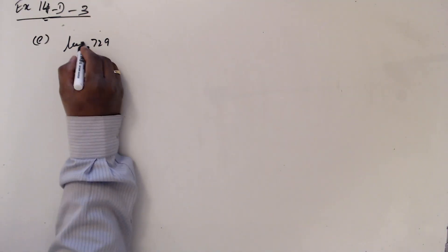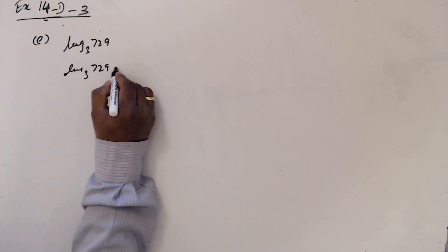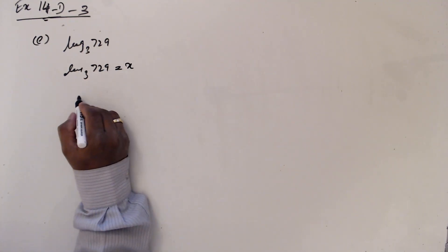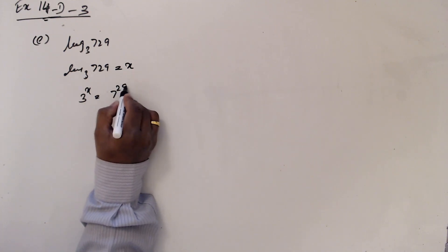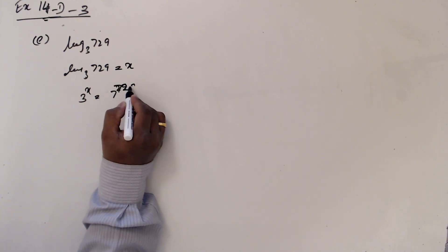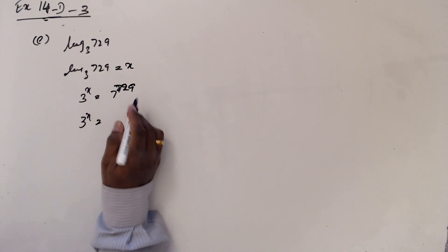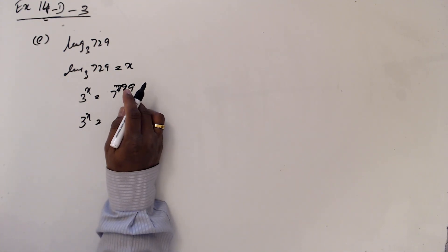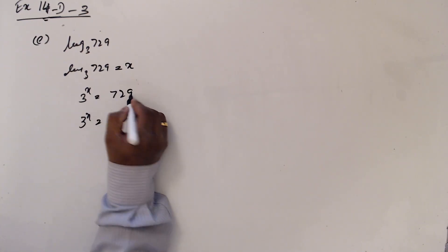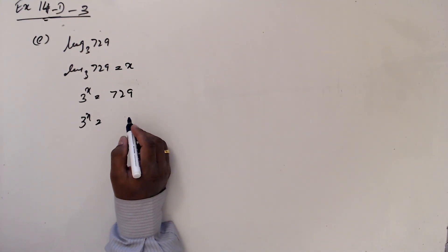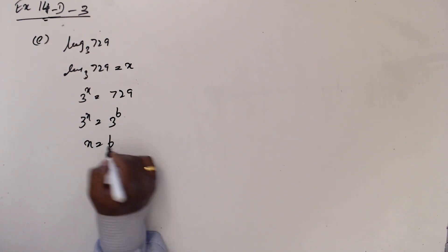Now this is e: we will take the power as x. Then this is the base — 3 to the power x is 729. Then 3 to the power x is 729, so that is 3 to the power 6, so x equals 6.